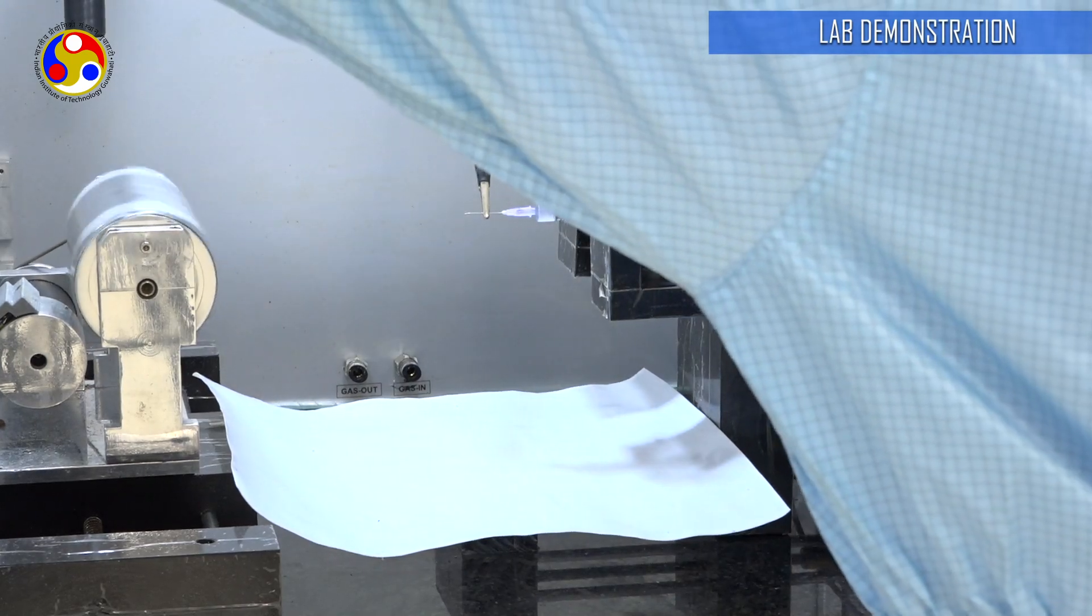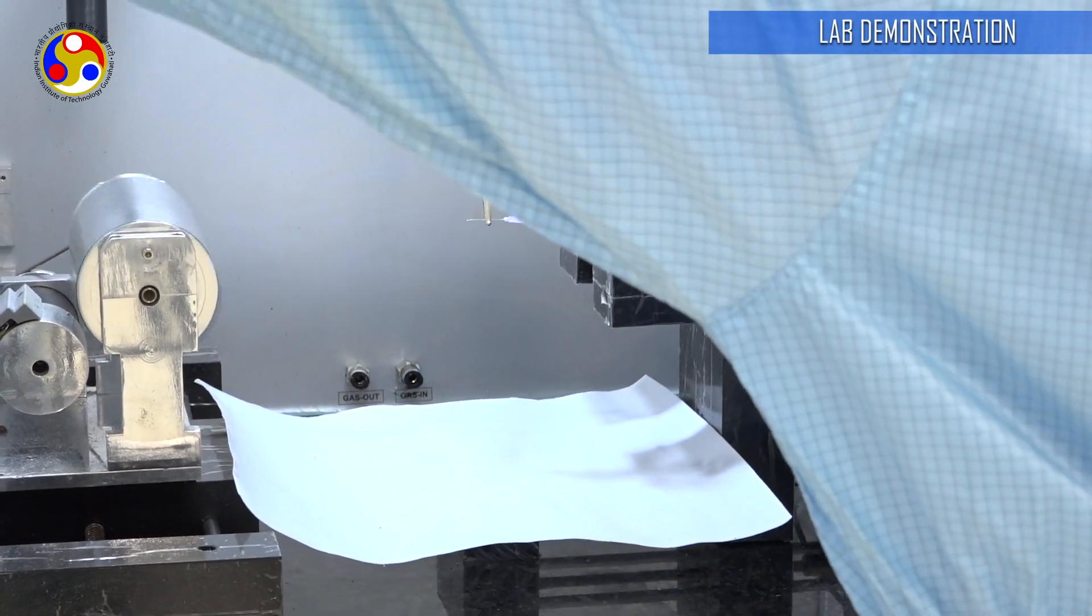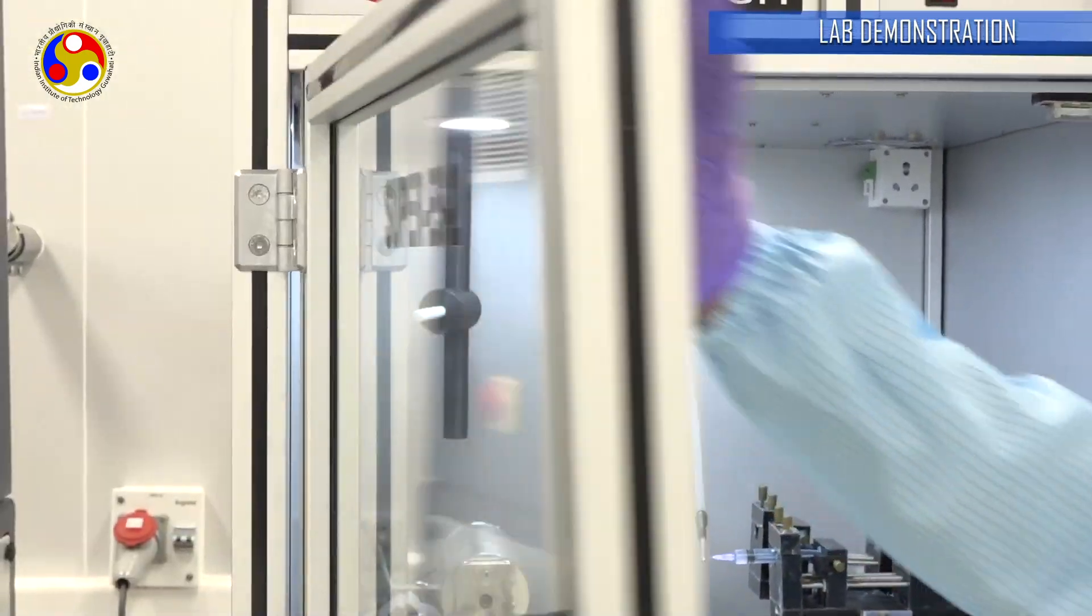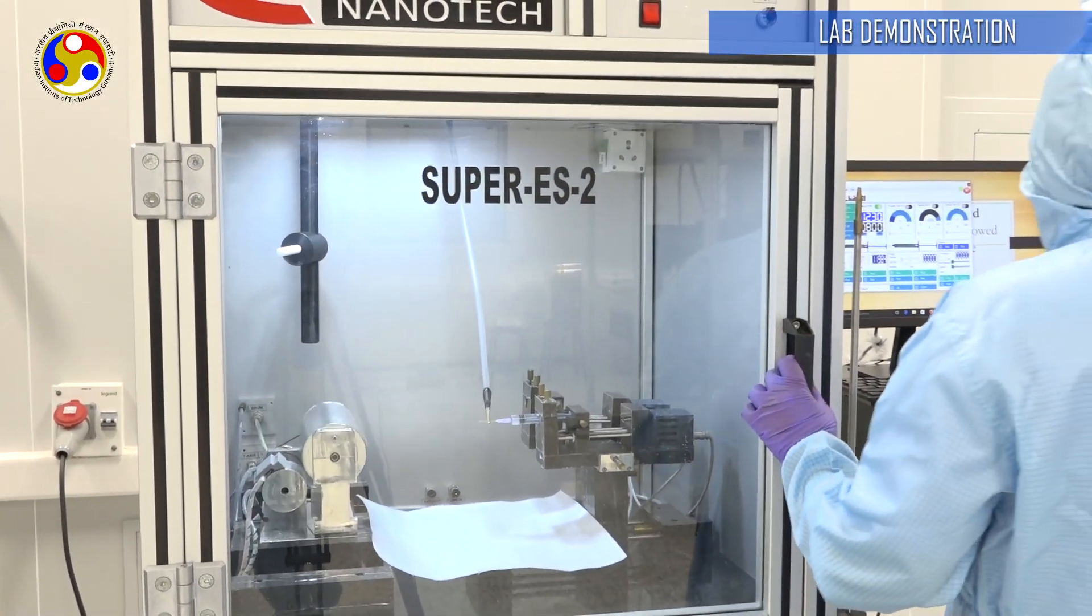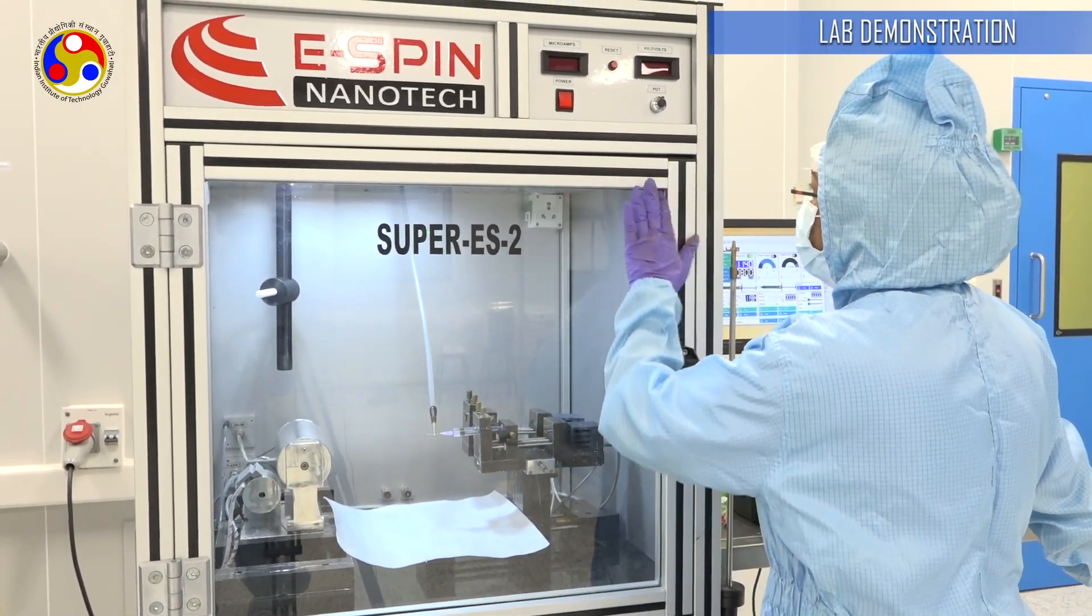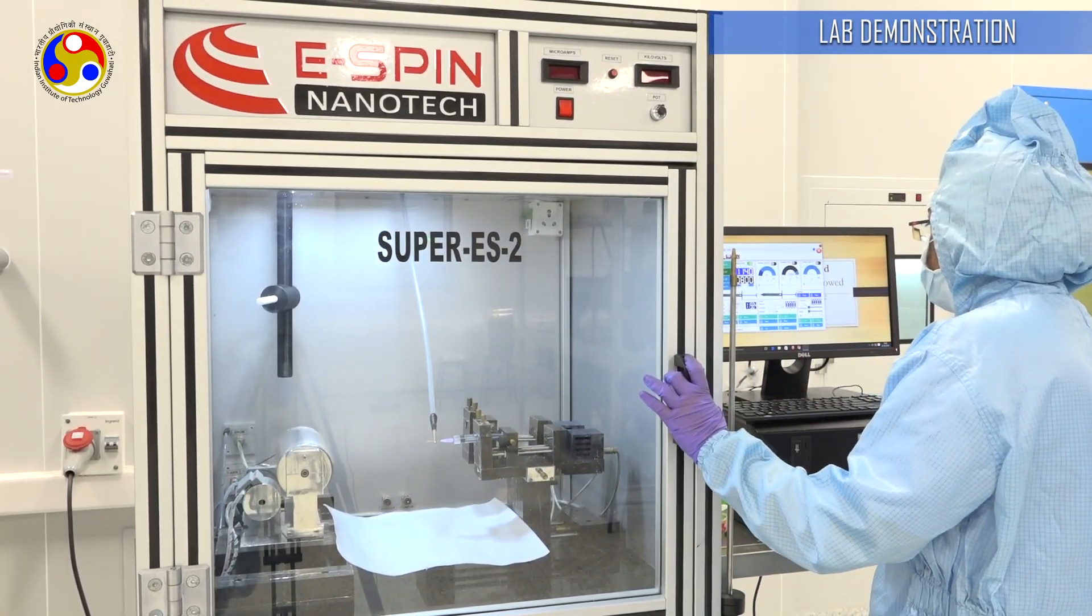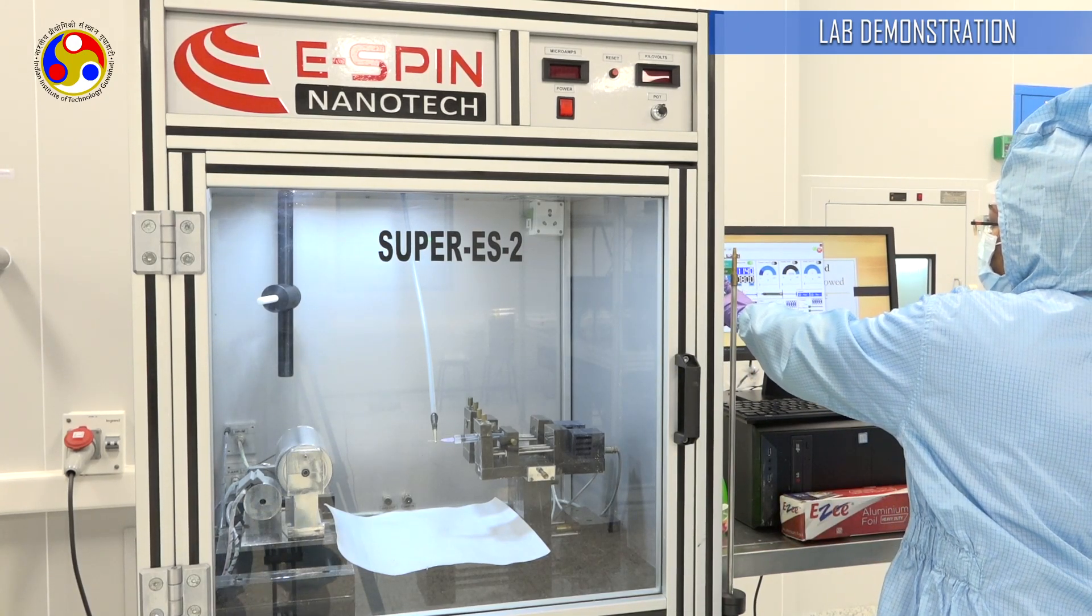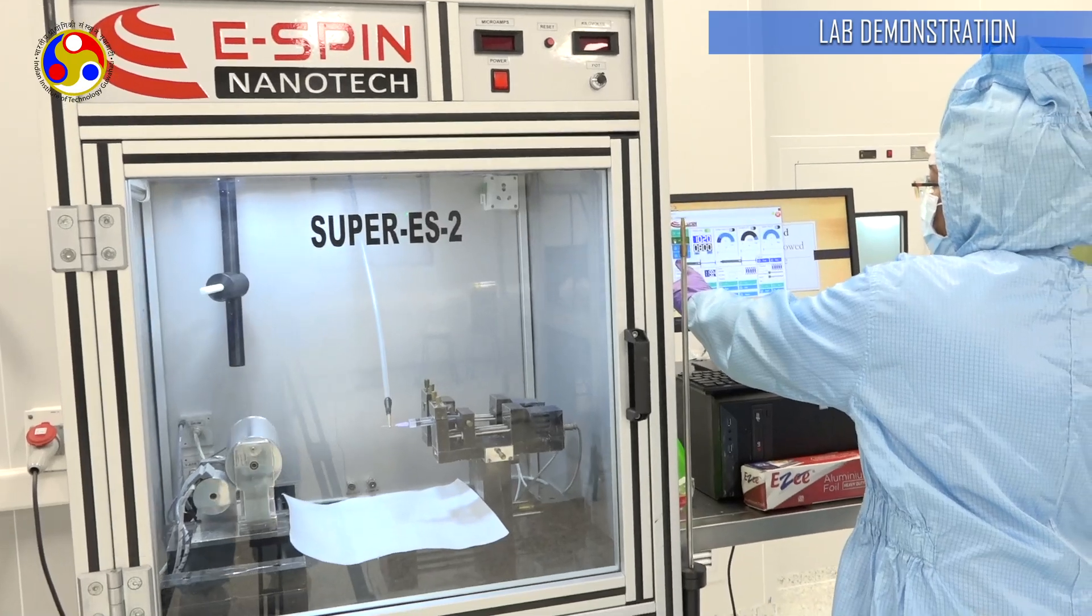Very importantly, I first need to close the chamber door before I turn this on. Since we are going to be using very high voltage, it's important to maintain the safety precautions. Right now at this software interface, it's showing HV off. I am just going to turn it on now.